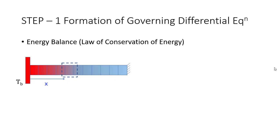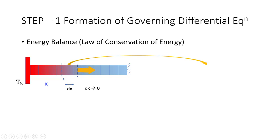We see the width of this element as dx. We have divided the fin into an infinite number of elements so the width of each element is very small — dx tends to zero. In order to get the energy balance we separate out this element from the fin. The left face of this element is at higher temperature and the right face is at lower temperature. The volume of the element is dV and the mass of this element is dm.